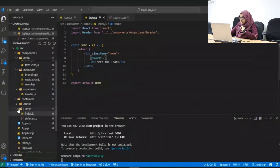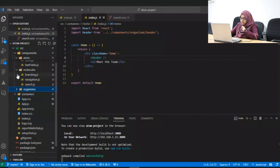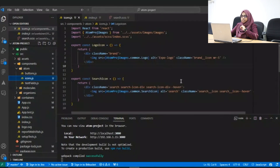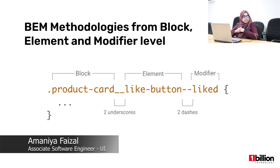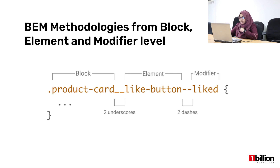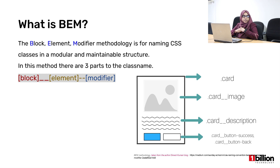So this is the integration of Atomic Design and ITCSS file structure. I mentioned about the style I had given in the atomic layer — the class names. This is something called BEM methodologies. BEM is actually Block Element Modifier. There are three parts to your class names. The reason why we do this is because it makes it easy to read through the class name and understand what style we're adding, and it's also easy to maintain these styles.